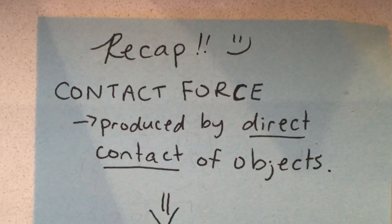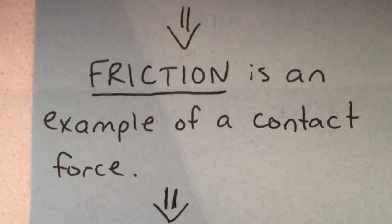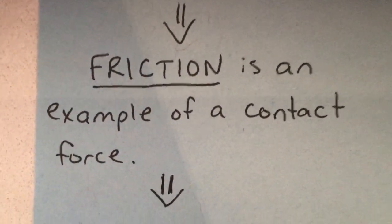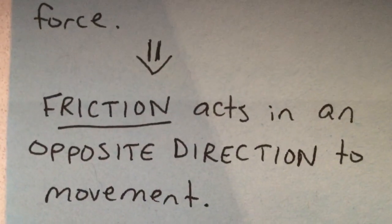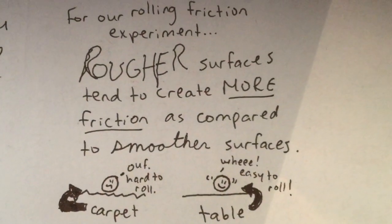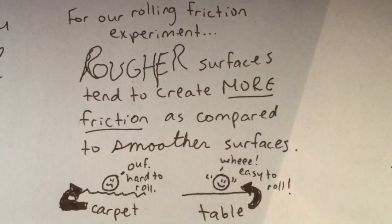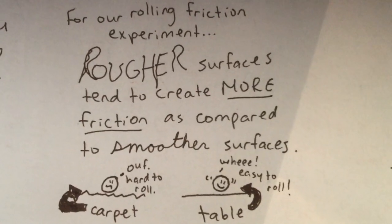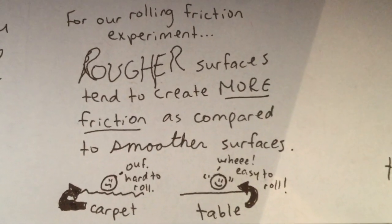Contact force is produced by direct contact of objects. Friction is an example of a contact force. Friction acts in an opposite direction to movement. And from our rolling friction experiment, we learned that rougher surfaces tend to create more friction as compared to smoother surfaces.